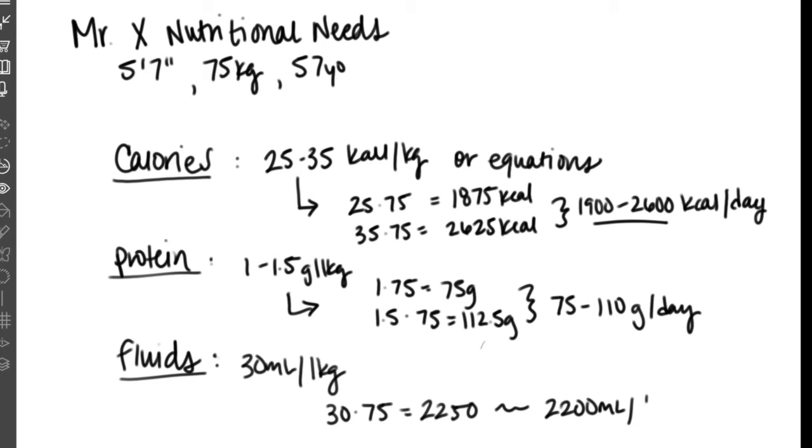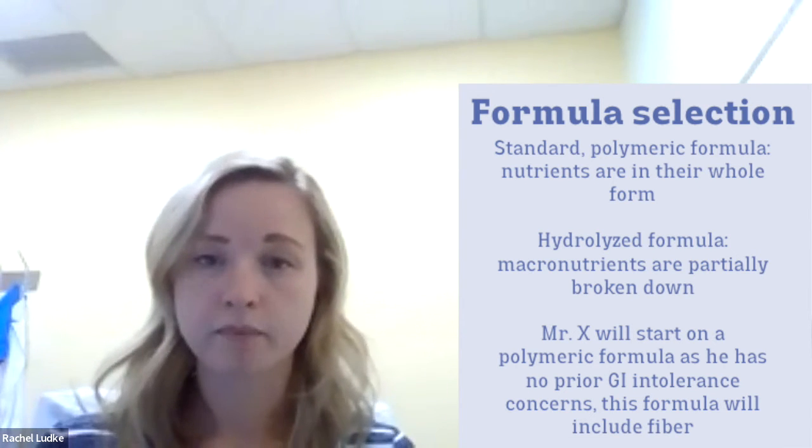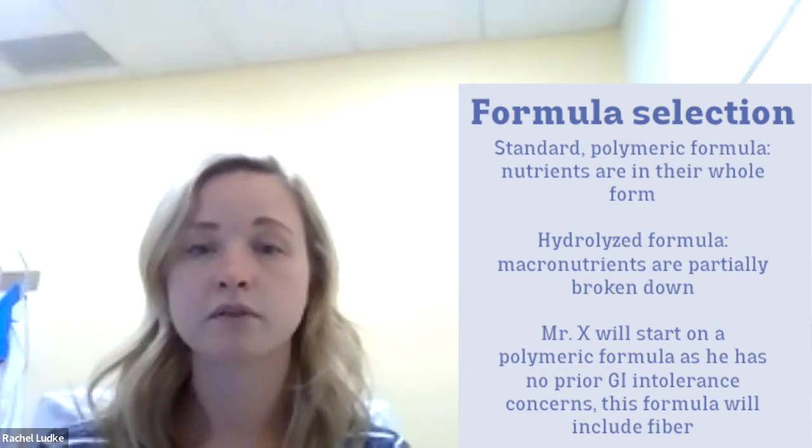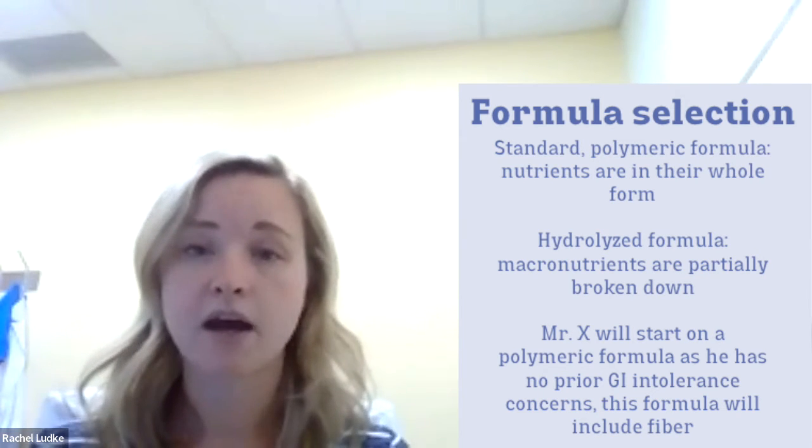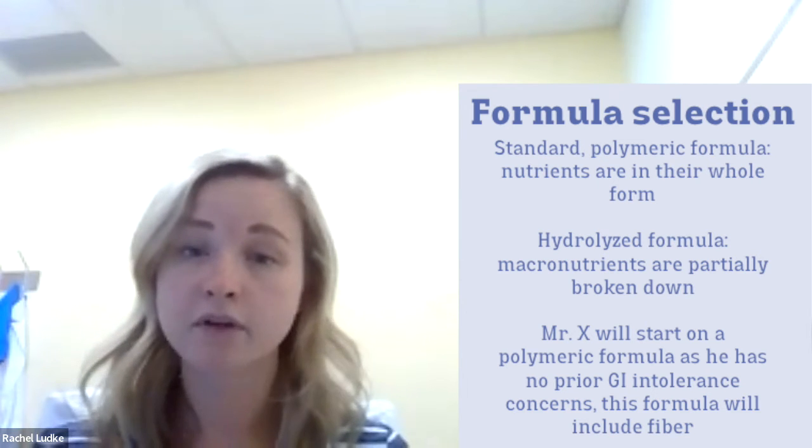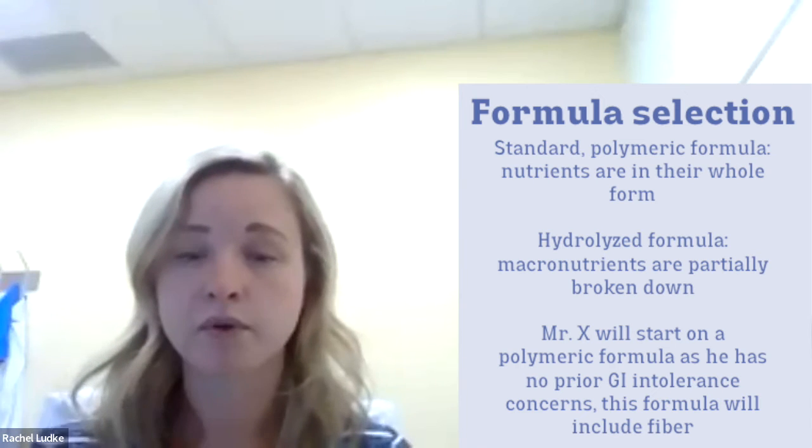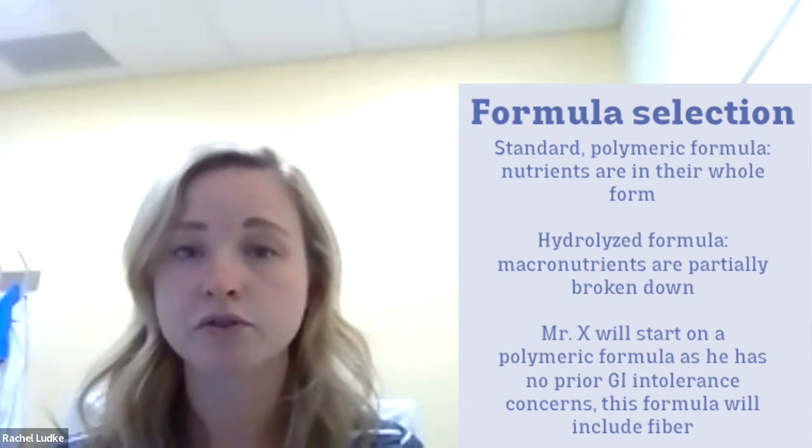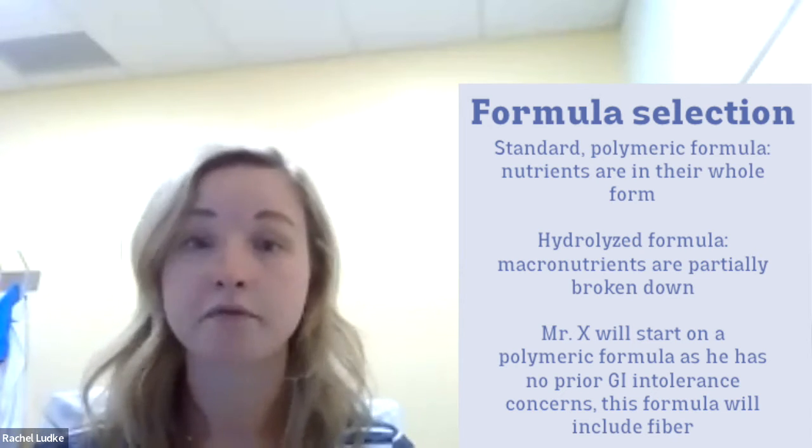Now that we have our three components needed to calculate a tube feeding regimen, we can move on to formula selection. Generally, we like to start with a standard polymeric formula. Polymeric just means that all the nutrients are in their whole form. Formulas are considered hydrolyzed if they have some nutrients partially broken down, like fat, for example, to help improve absorption or digestion. Because Mr. X doesn't have any issues with prior GI surgeries or intolerances, we can go ahead and use a standard polymeric formula with fiber.